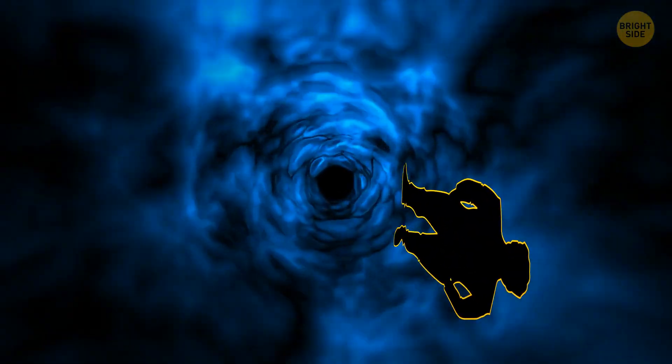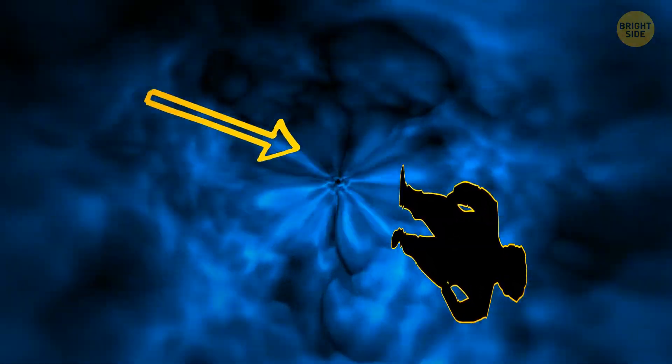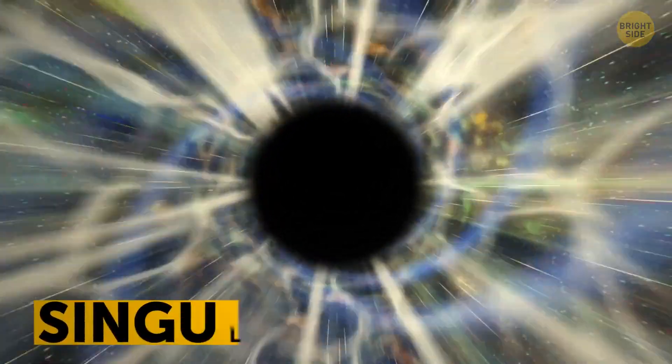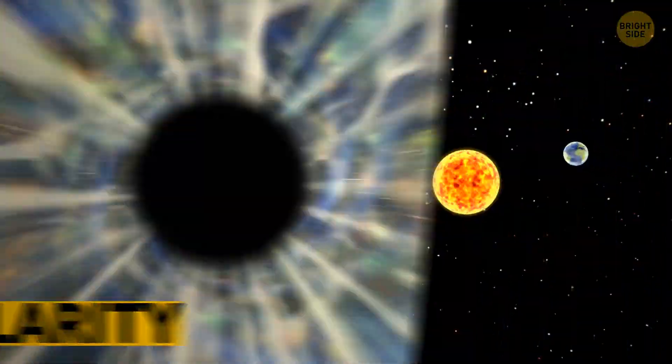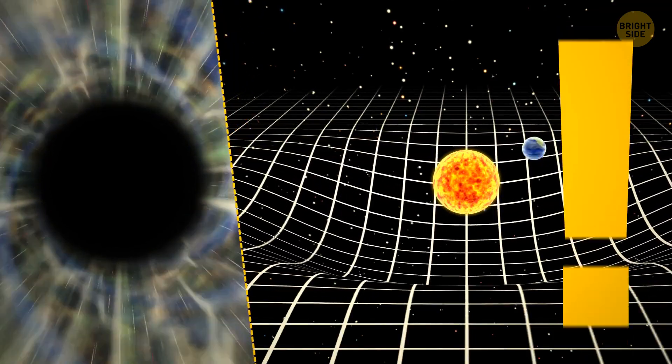When you go deeper inside the hole, you'll notice space becoming curvier and curvier. At the center of the hole, it's infinitely curved. It's called singularity. Laws of physics based on the ideas of space and time don't have power here.